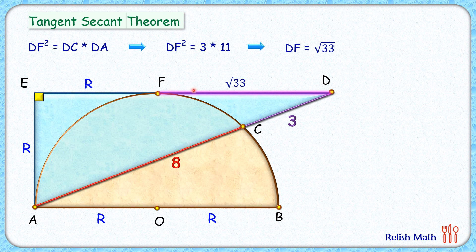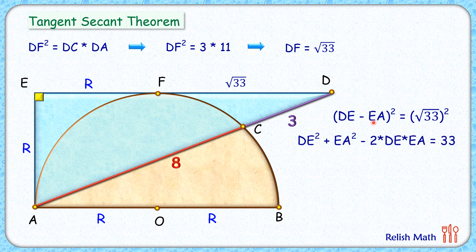Now full length DE is root 33 plus R, and EA is R. So the difference between DE and EA is what is root 33. Now taking square on both sides of this equation, opening the square on left side we will get DE square plus EA square minus 2 times DE times EA is 33.